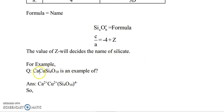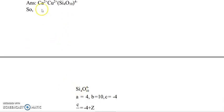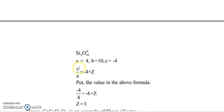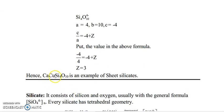For example, CaCuSi₄O₁₀ — you can identify the Z value from the formula. Calcium is in the +2 oxidation state and copper is in the +2 oxidation state, so total is +4. Therefore Si₄O₁₀ has a 4-minus charge: A equals 4, B equals 10, and C equals minus 4. Using the formula C/A equals minus 4 plus Z, substituting values gives Z equals 3. So CaCuSi₄O₁₀ is an example of sheet silicate or 2D silicate.